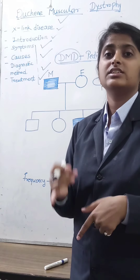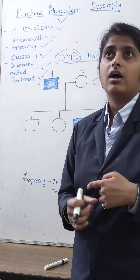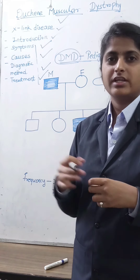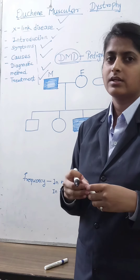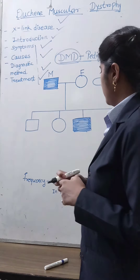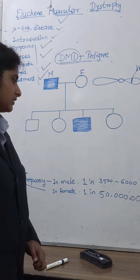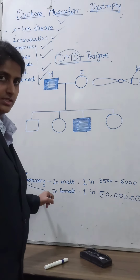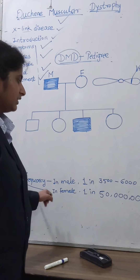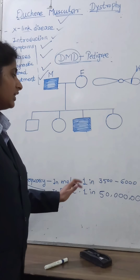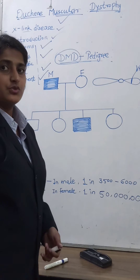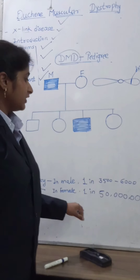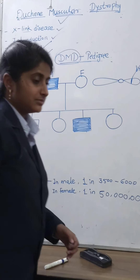Regarding frequency, in males, DMD occurs in approximately one in 3500 to 6000 births, and patients can live more than 50 years with proper care.